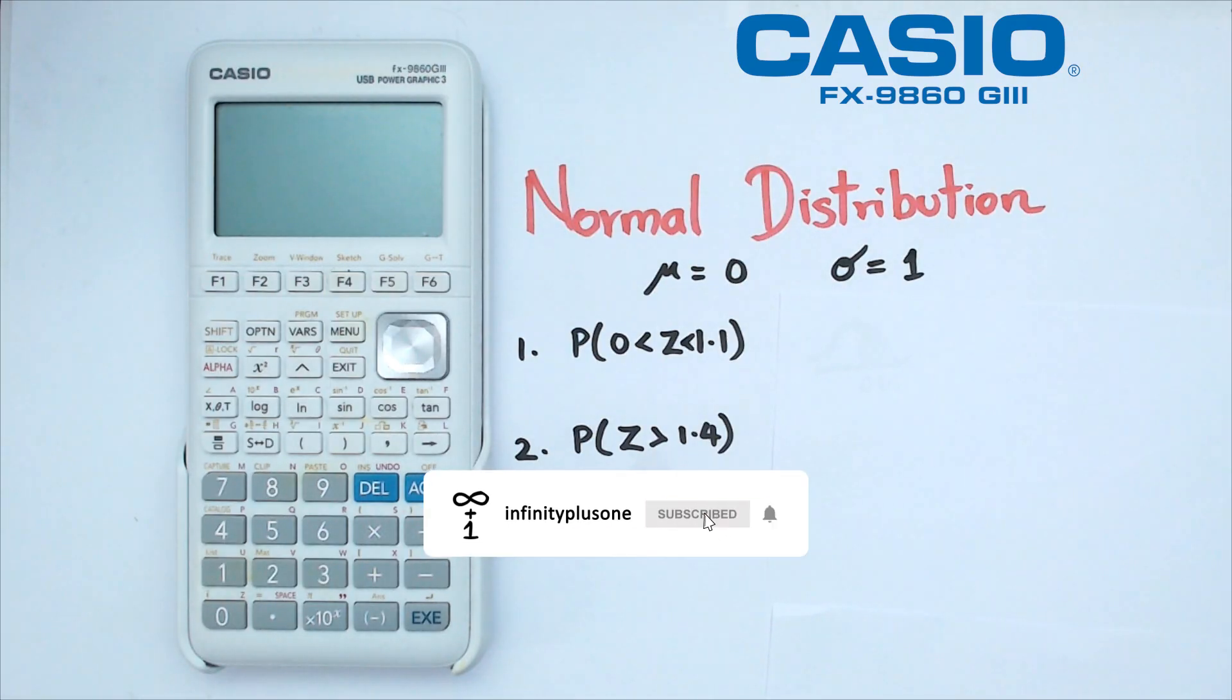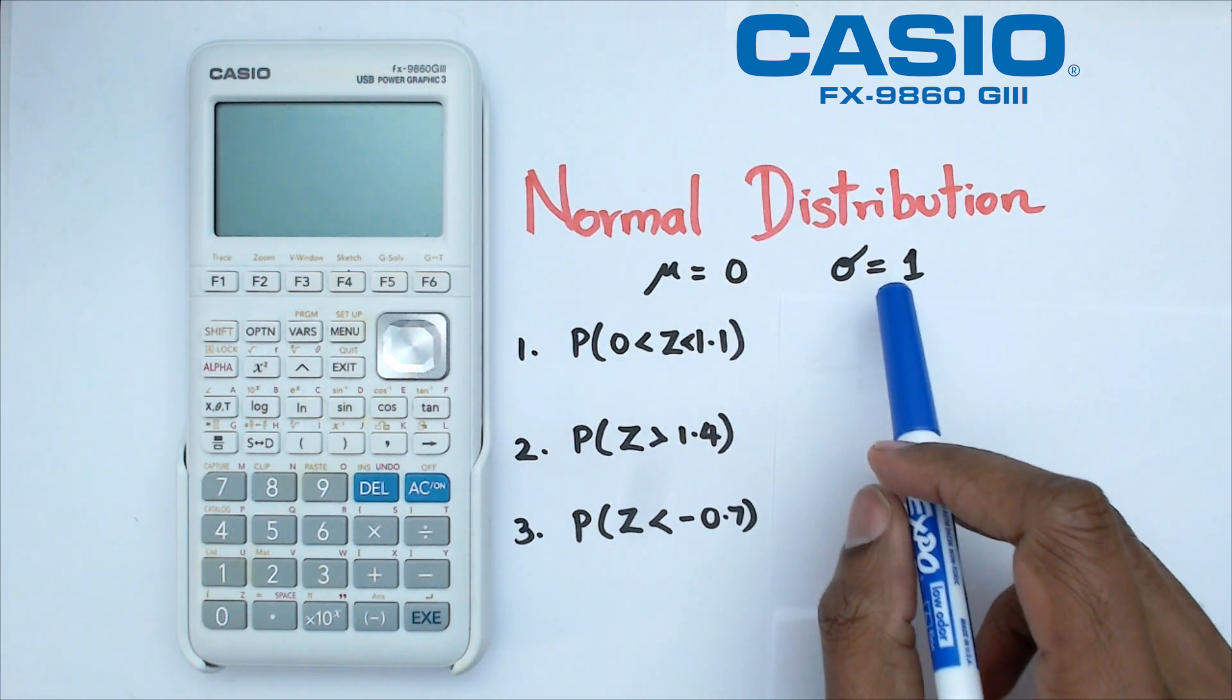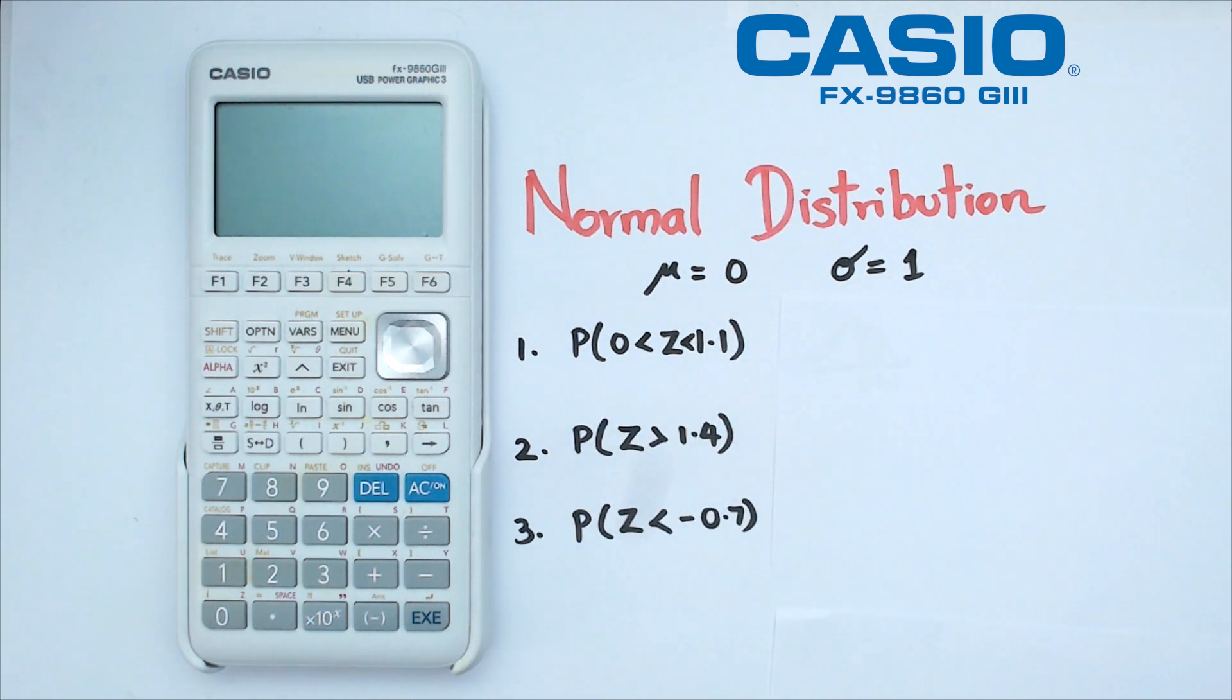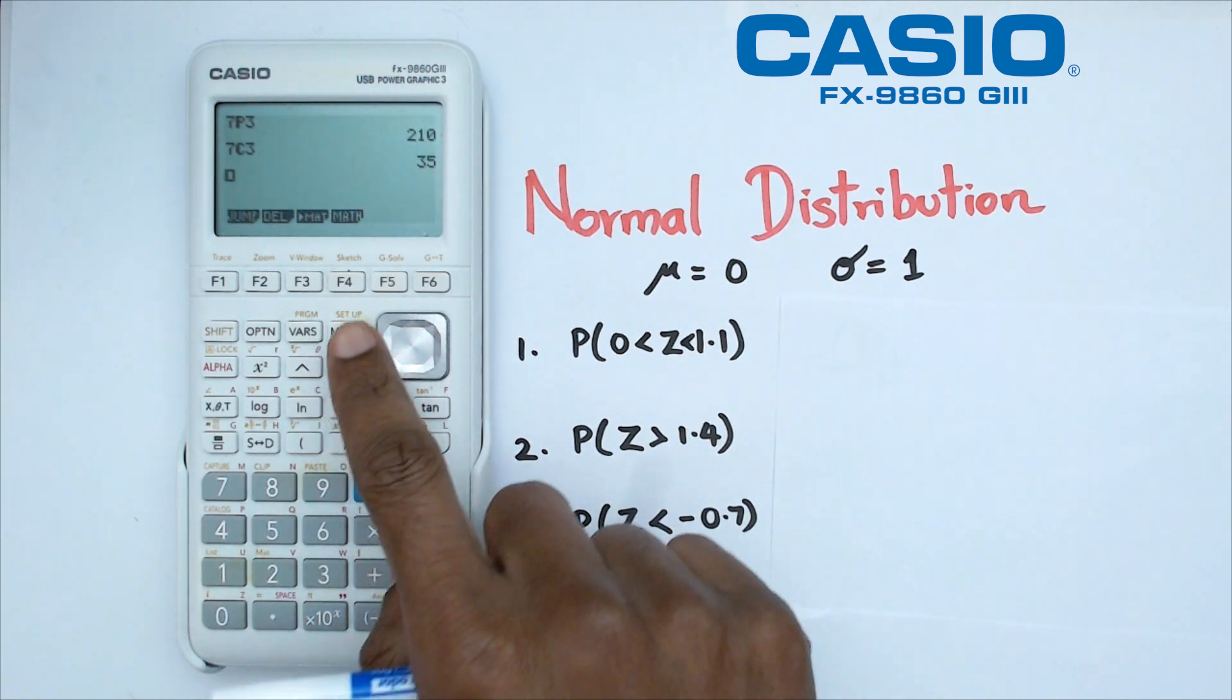All right folks, so what we're going to be doing is we're going to be using the mean of zero and the standard deviation of one for these three particular questions here. So what we're going to do is we're going to switch on the calculator, click on menu,